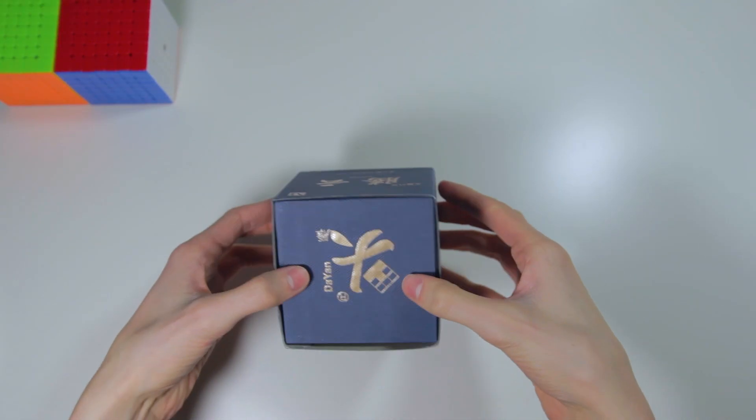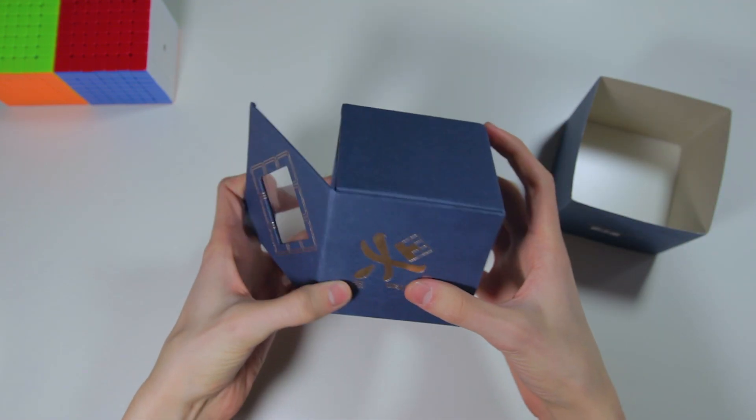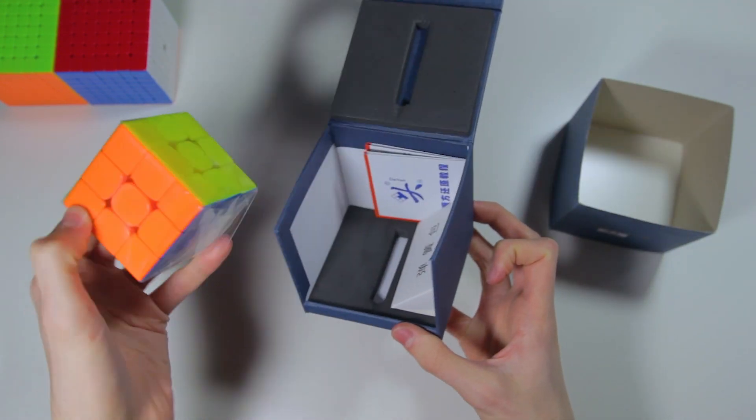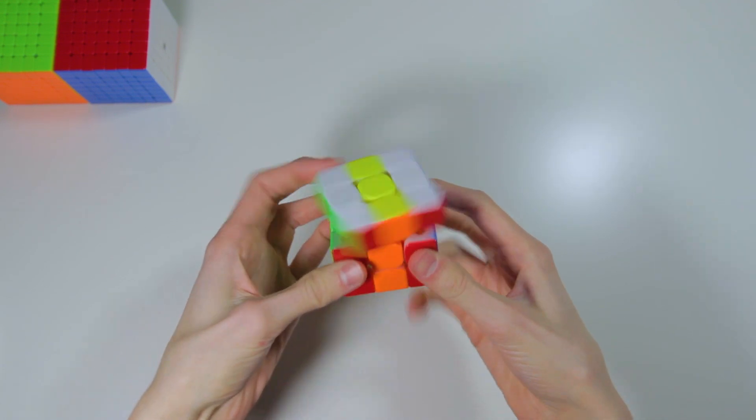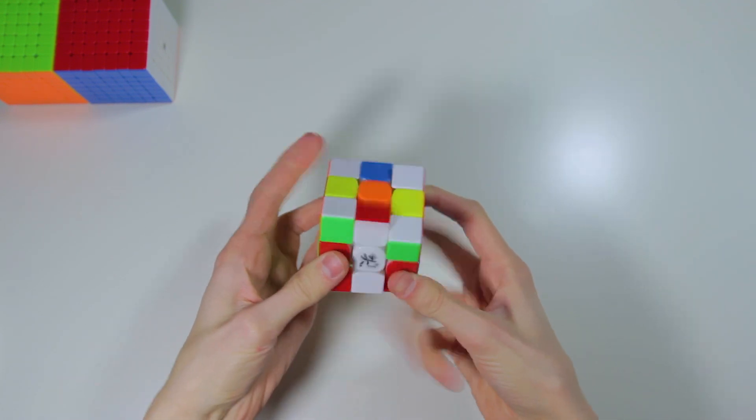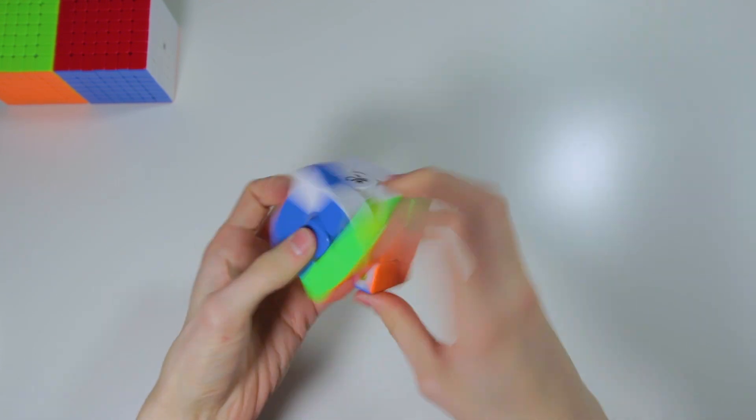Finally, we have Dayan's new 3x3, the Tengyun-M. The first thing I noticed when I took this cube out of the box is that the stickerless shades on this cube are a bit brighter than the dull stickerless shades that Dayan had on some of their past cubes, which is definitely a change for the better.